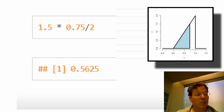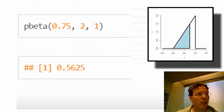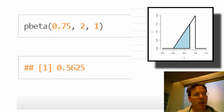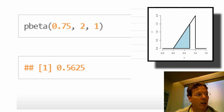This density is actually a special case of the beta distribution. The R code uses pbeta to get this probability directly. The letter p in front of a function name asks for probabilities, so pbeta(0.75, 2, 1) gives the probability of being less than 0.75 under that beta density — and you get the same answer: 56%.